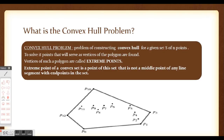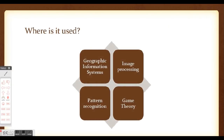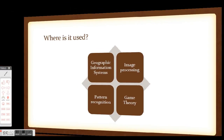This problem has various applications in geographic information systems, image processing, pattern recognition, and game theory. In image processing or pattern recognition, we can identify a face using facial descriptions or static points like the eyebrow. In geographic information systems, we can determine whether a location is within a specified area or whether a person is within a conflict zone.